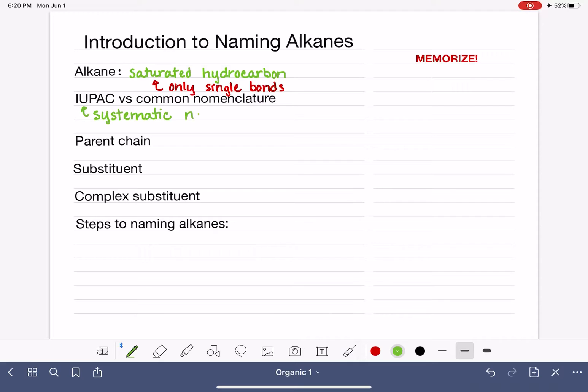A systematic name, meaning that we have a method or a pattern or a way that we build the name of a molecule, and we all understand this systematic method. So the IUPAC system, once you understand how it works, it's very easy to use.